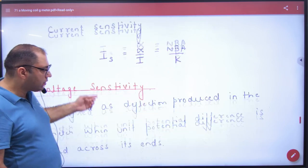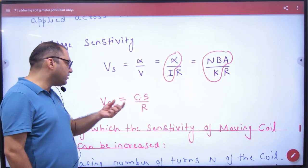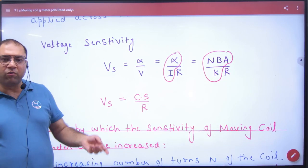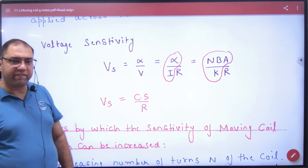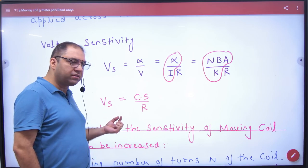And if current sensitivity has increased, then voltage sensitivity also increased. The voltage sensitivity can be increased by decreasing R. If you reduce the galvanometer's resistance, then voltage sensitivity will also increase.